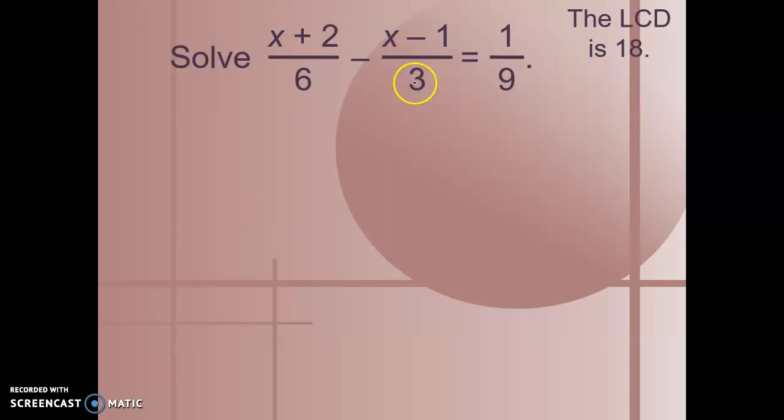The multiples of 3 are 3, 6, 9, 12, 15, 18, and so on. The multiples of 6 are 6, 12, 18, and so on. And the multiples of 9 are 9 and 18. So we can see that all of them have 18 as a multiple.